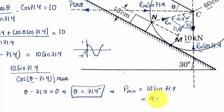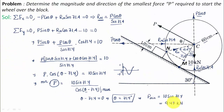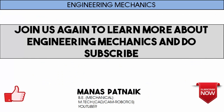Substituting θ = 71.4 degrees, cos(0) = 1, so P_minimum = 10 sin71.4 = 9.47 kilonewtons. The wheel will just start to move when pulled with 9.47 kilonewtons at an angle of 71.4 degrees with the horizontal.